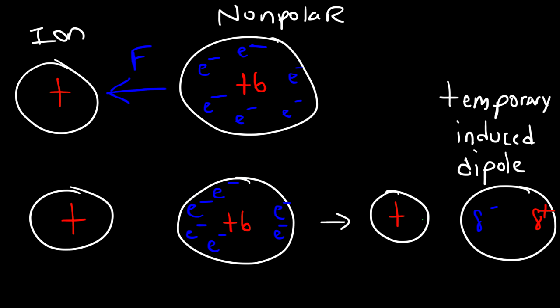The interaction between this ion and this induced dipole is known as the ion induced dipole interaction. It's between an ion and a nonpolar molecule or atom. Polar molecules are permanent dipoles. Nonpolar molecules can become induced dipoles — temporary induced dipoles — if you can distort the electron cloud. So now you know what an ion induced dipole interaction is: it's between an ion and a nonpolar molecule.